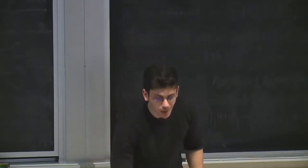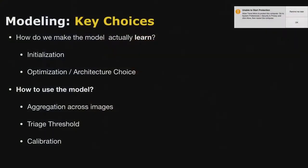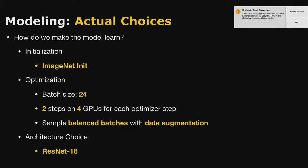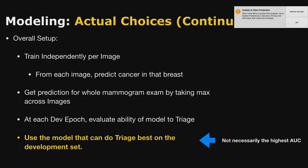To summarize the modeling choices: ImageNet initialization makes your life happier, use bigger batch sizes, and the architecture choice doesn't really matter if it's convolutional. We train independently per image - a harder task since we're not using other views or prior mammograms. We get the prediction for the whole exam by taking the maximum across different images. At each development epoch, we evaluate the model's ability to do the triage task and take the best model. Your true end metric is what you're measuring during training, and you do model selection and hyperparameter tuning based on that.